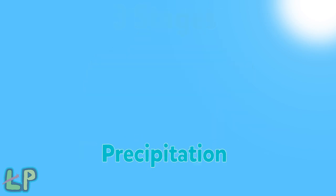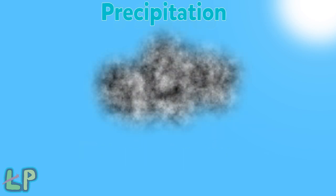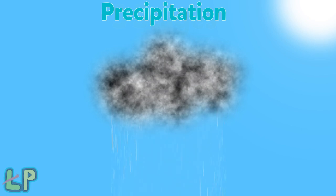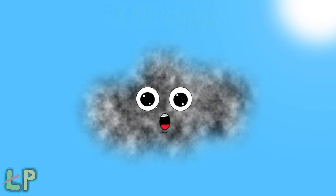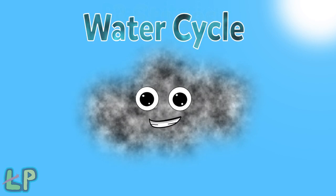Precipitation is when a cloud becomes a storm and it rains, you can see. This process keeps going over and over. That makes the water cycle.